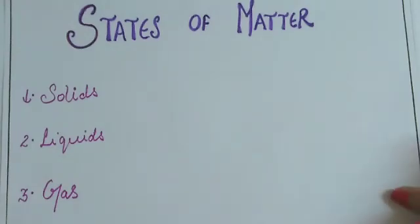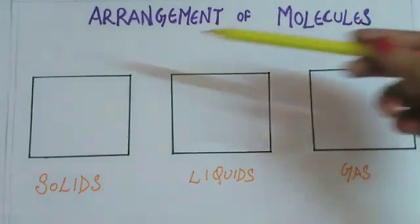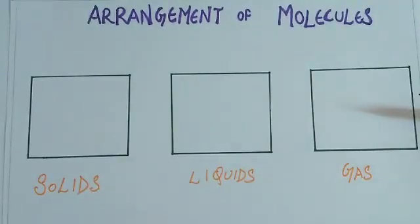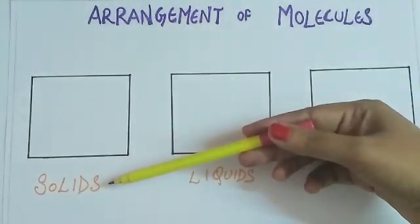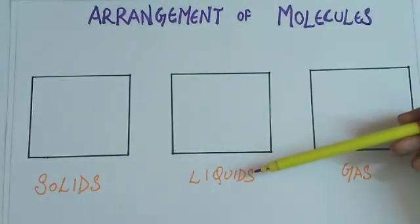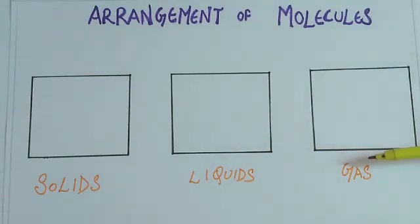So what is the molecular arrangement? First of all, you have to draw 3 boxes of equal sizes. In the first box you will write solids, second box liquids and third box is of gas.